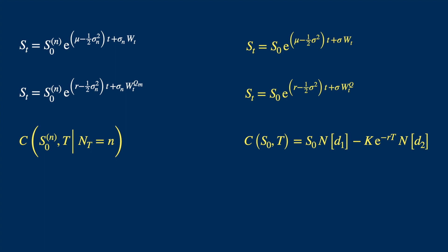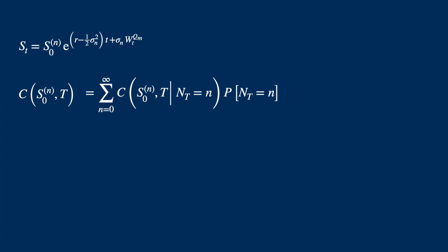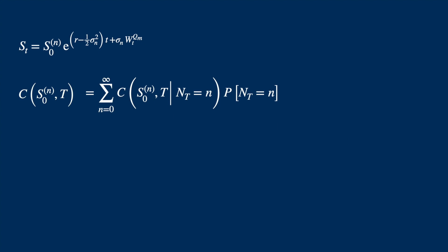Notice this is conditional on the number of jumps equal to n, but we can remove the conditioning by using the iterated expectation. The number of jumps can be anything from zero to a large number, so we condition on the number of possible jumps, calculate the price and then weight it by the probability of jumps taking that value and sum across all possible values. We know the number of jumps follows Poisson process and we know the Poisson density. So we can substitute the density and we have the Merton formula for the price of a European call option.